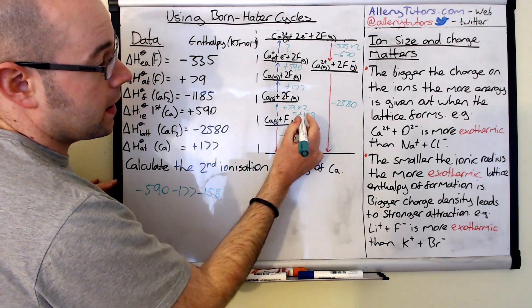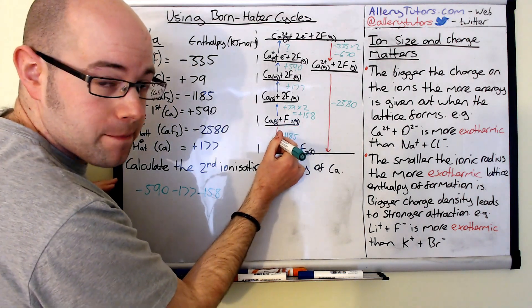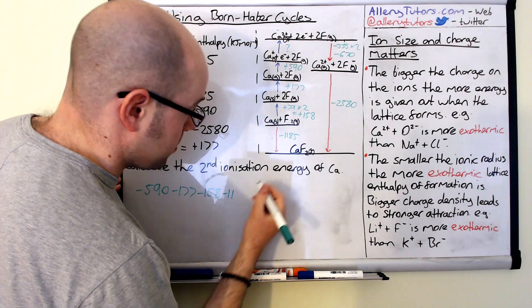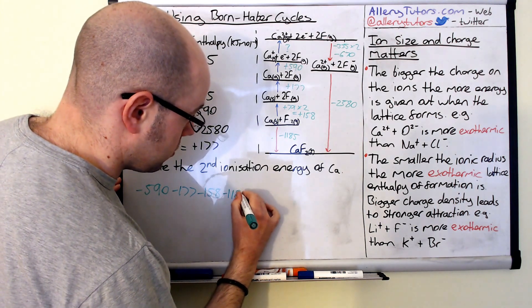So put that there. And then we're going with the arrow here as you can see. So that's going to be minus 1185. So because we're going with it we don't need to change the sign.